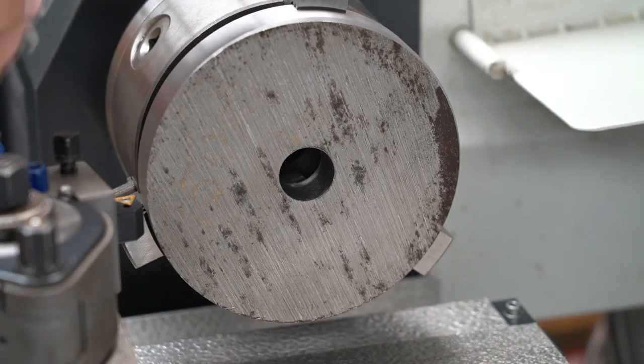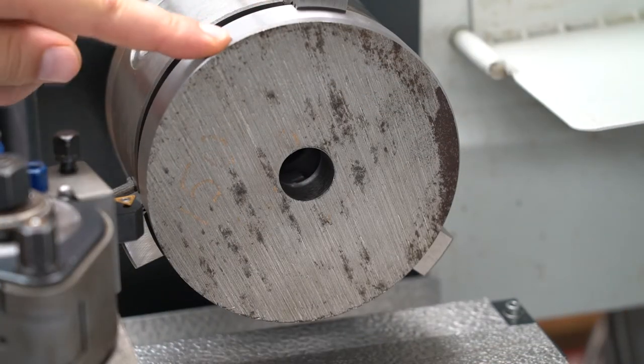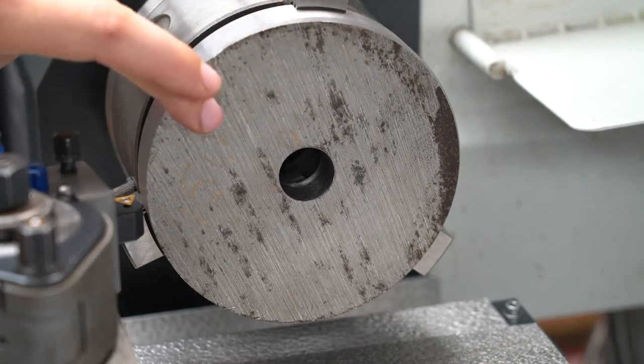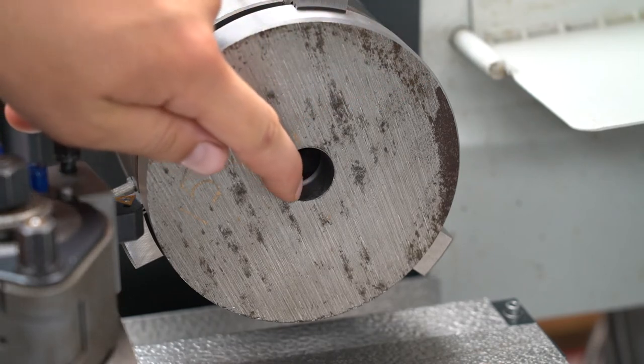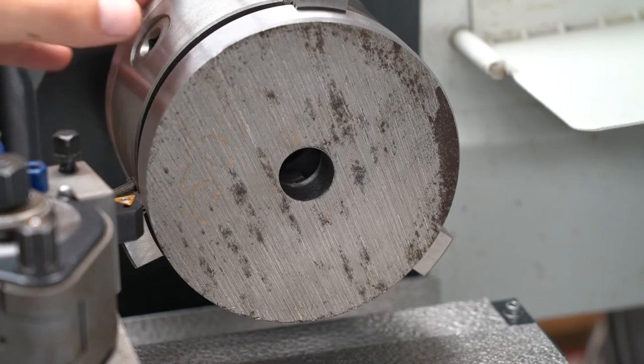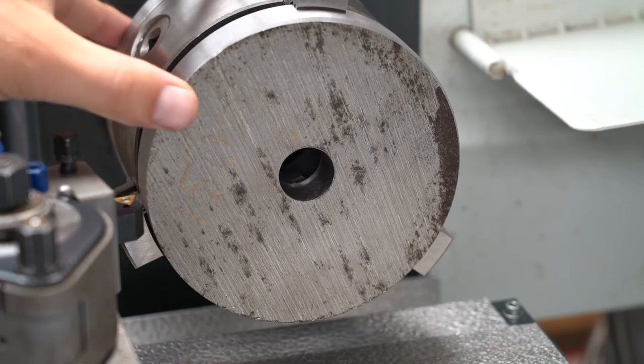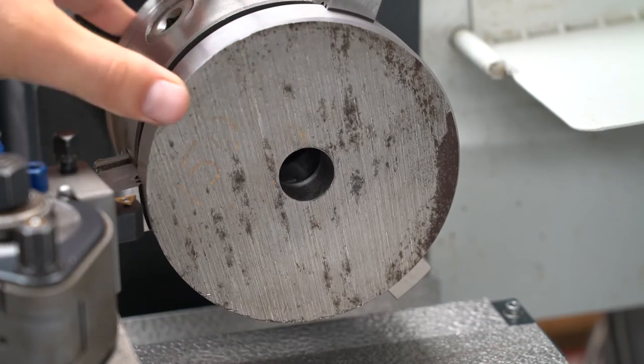So I've got it out of the fixture and mounted in the chuck. I'm going to face this side and then start boring it out to the size of the lip on the lathe spindle, which I'm going to machine very precisely.